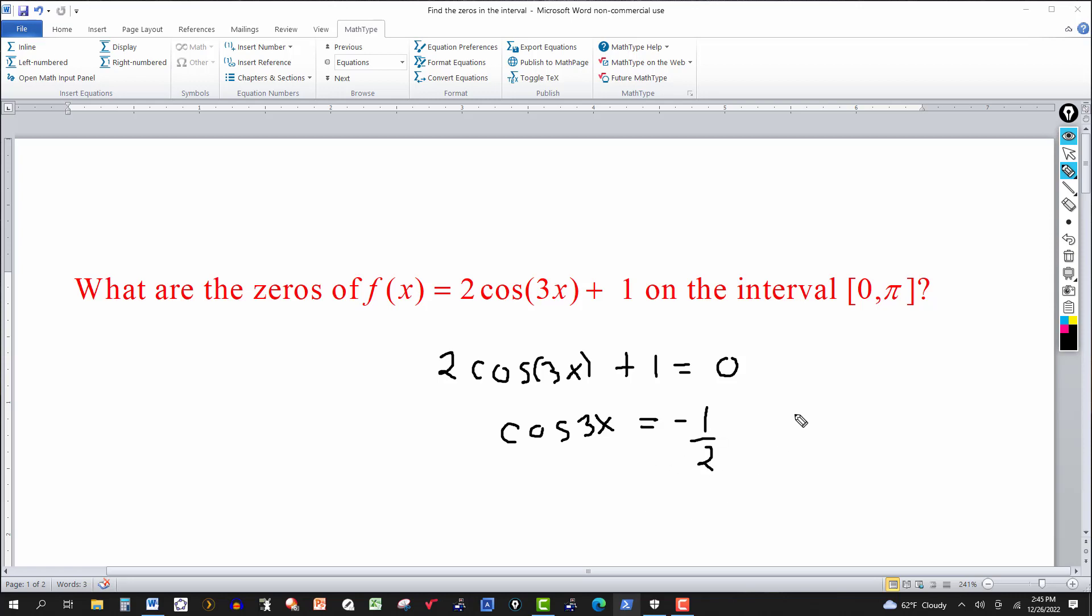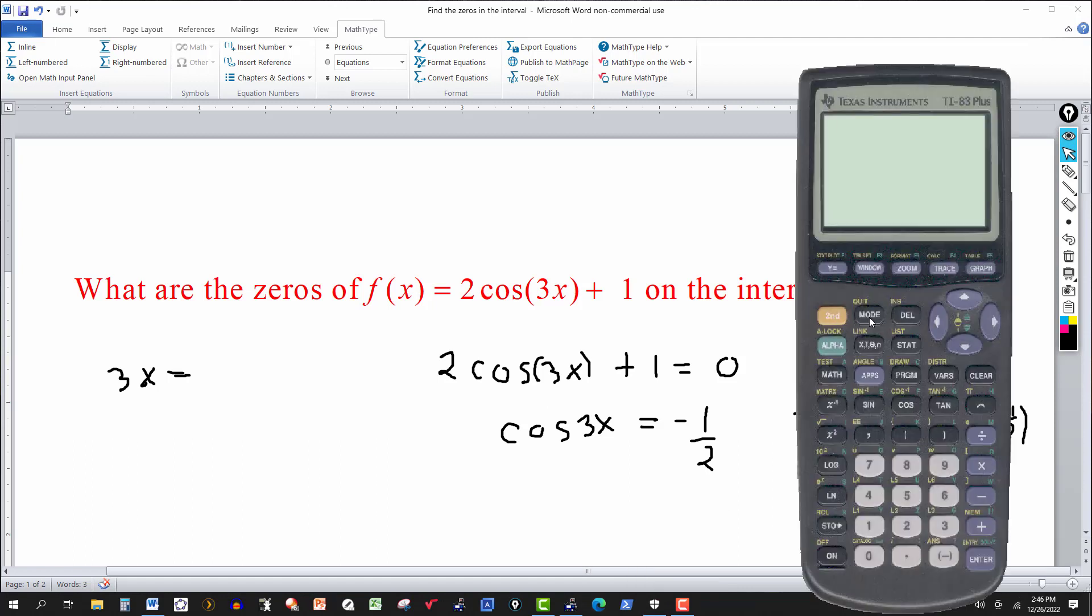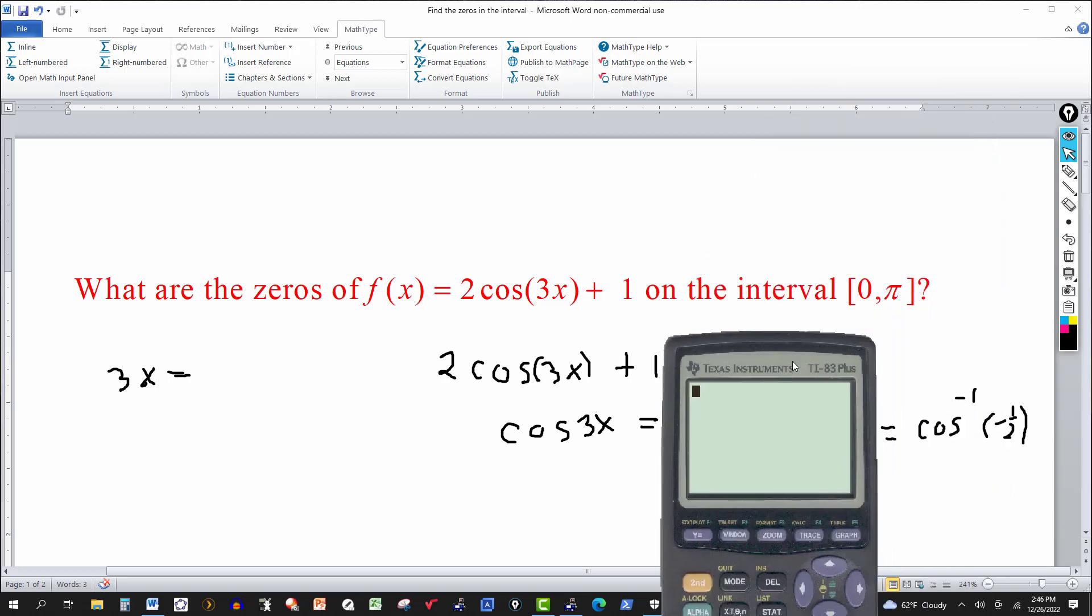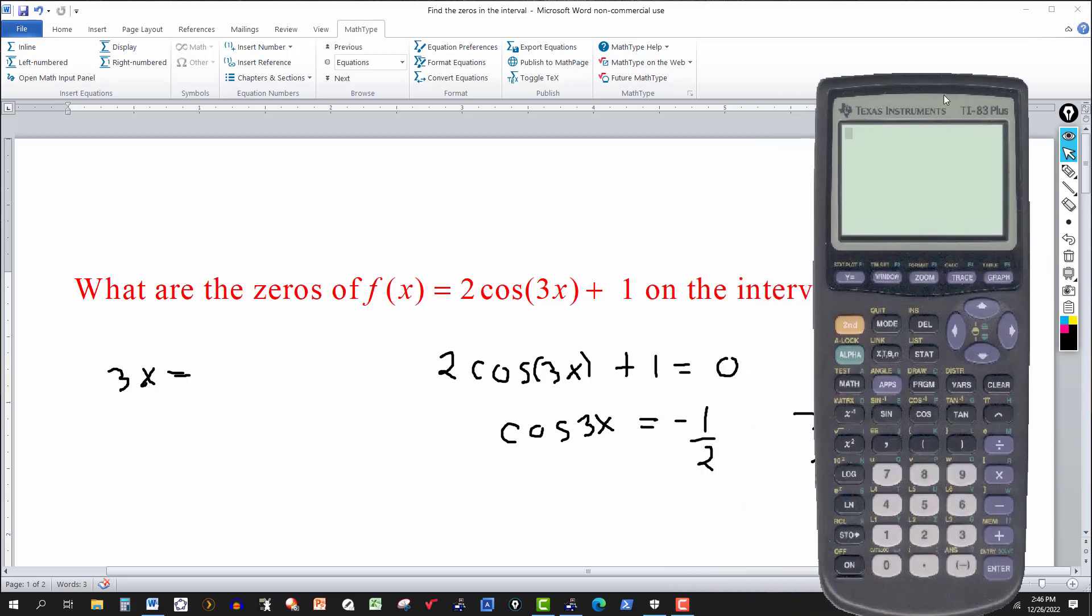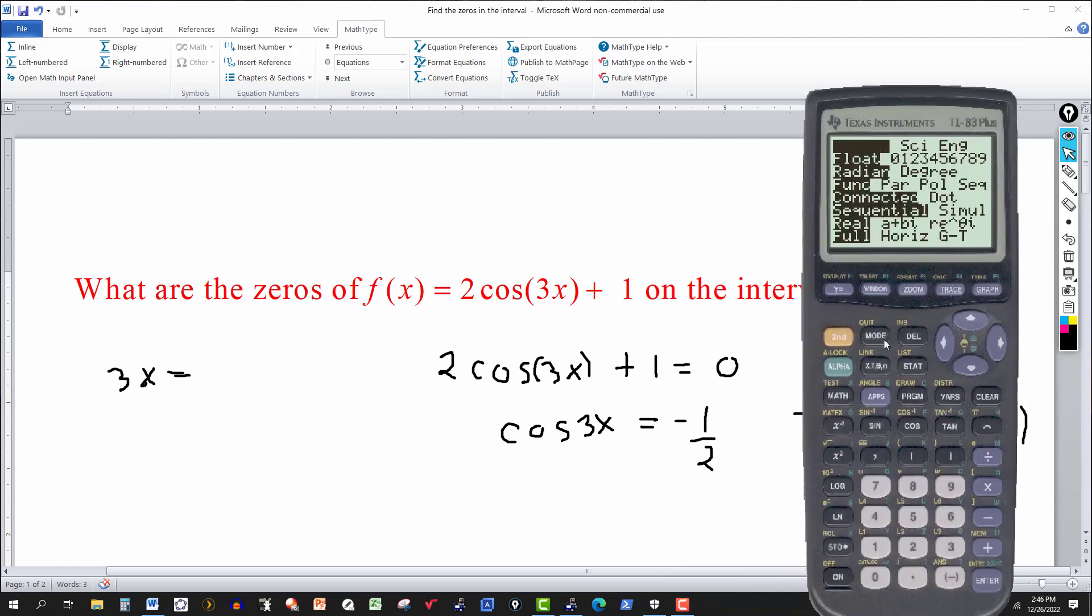Now you could take your calculator here and compute this out. 3x, take the cosine inverse of both sides. Cosine inverse of the left side would just give me 3x. And then on the right side I'd have cosine inverse of negative 1 half. Now that would tell me that 3x is equal to cosine inverse of negative 1 half. So on your calculator you can do that. Let's just go ahead and do it here. And I'm going to set my calculator, even though we want the answer in radians, the interval is from 0 to π.